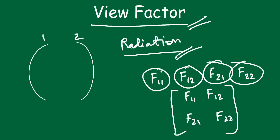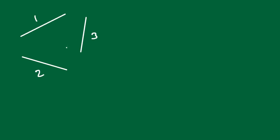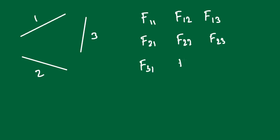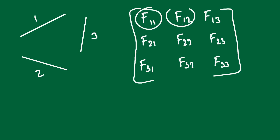We will solve important problems later, but we also need to learn two important relations required to find all these view factors. Consider three surfaces instead of two. If asked how many view factors there will be, the answer is nine: F11, F12, F13, F21, F22, F23, F31, F32, and F33. So nine view factors are present in total, and I will show the two important equations needed to find them.